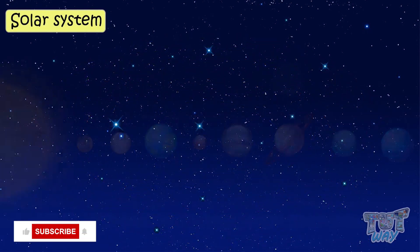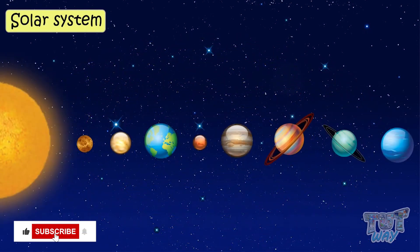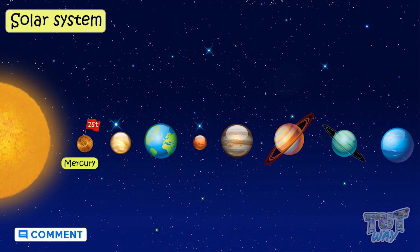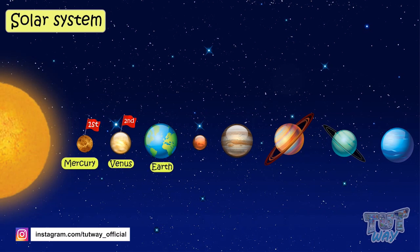There are eight planets that revolve around the sun. Let's learn their names in order of their position from the sun. Mercury, which is the first or nearest. Then Venus. Then Earth, our planet, on which we live. It is the third planet.